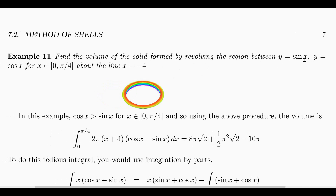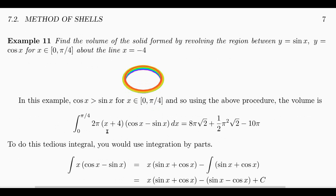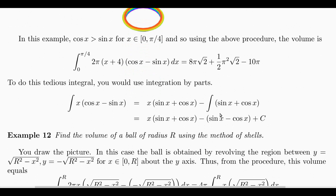Let's do another example. The solid formed by revolving the region between Y equals sine of X and Y equals cosine of X for X between 0 and pi fourths about the line X equal to minus 4. The region is revolved around a line far to the left. On this interval cosine of X is bigger than sine of X, so the distance to the axis is X plus 4, times the height of the shell, times dx, times 2 pi. Integrating from 0 to pi fourths and using integration by parts gives the final answer.